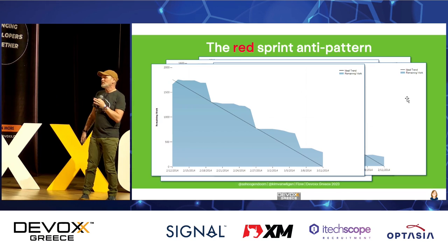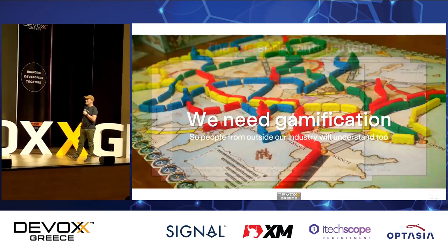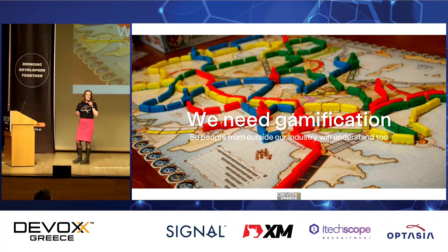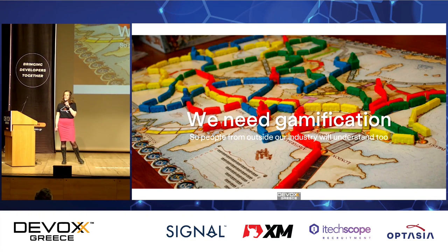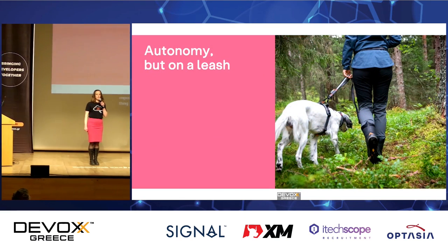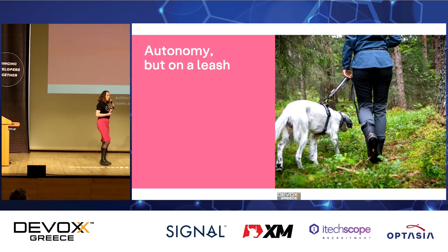So we need to keep sprints in. We also need gamification, because playing games is much more important than writing code. There's this thing in the Agile Manifesto that has been bothering managers: it says the best designs, architectures, and code come from autonomous teams. If you're a manager who used to make all the decisions, now you have this autonomy thing — there goes your job.